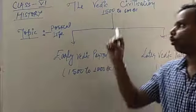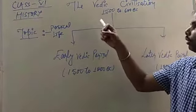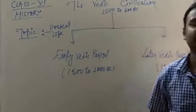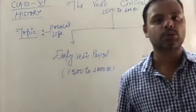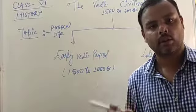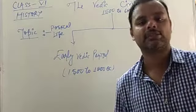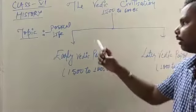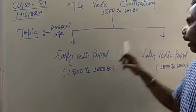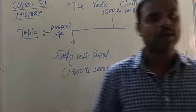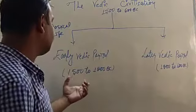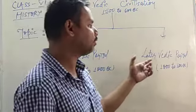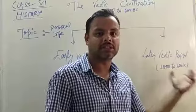The whole of the Vedic period or Vedic civilization covers the period from 1500 to 600 BC. The Vedic civilization is sub-categorized into two parts: early Vedic period from 1500 to 1000 BC and the later Vedic period from 1000 to 600 BC.